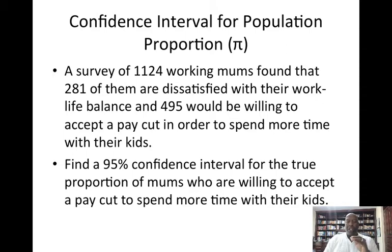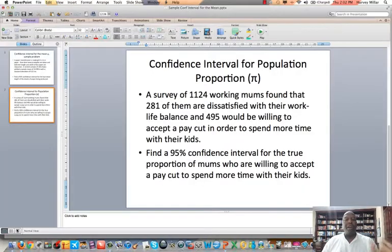So we'll just focus on one of those. Each of those values could give us a sample proportion, that is the proportion of moms who are dissatisfied with their work-life balance and the proportion who are willing to take a pay cut. So we'll just work on one of them. Find a 95% confidence interval for the true proportion of moms who are willing to accept a pay cut in order to spend more time with their kids. So I'm going to do that part of the question.